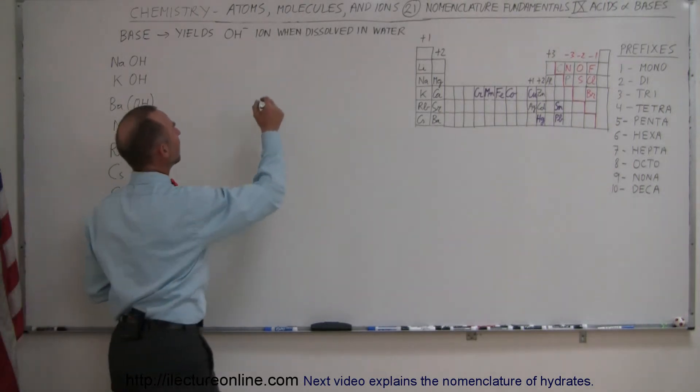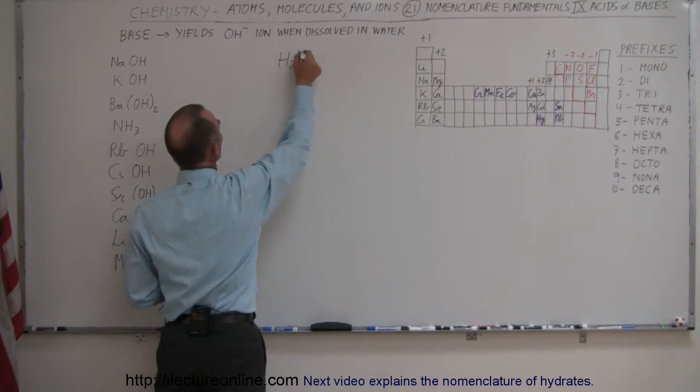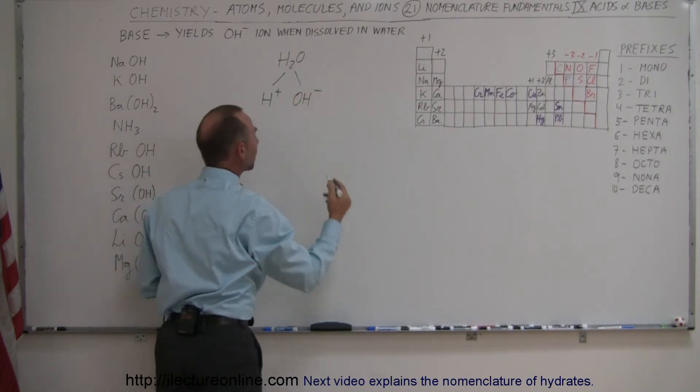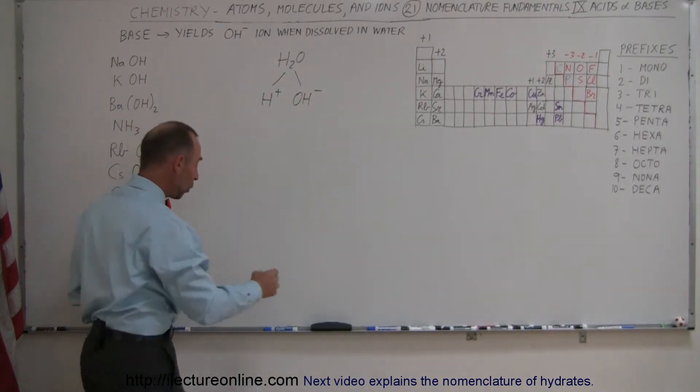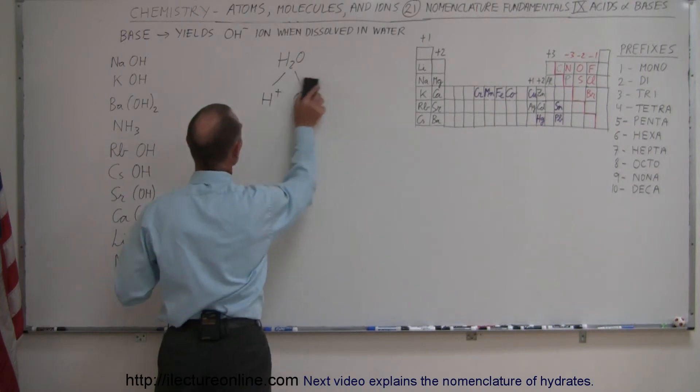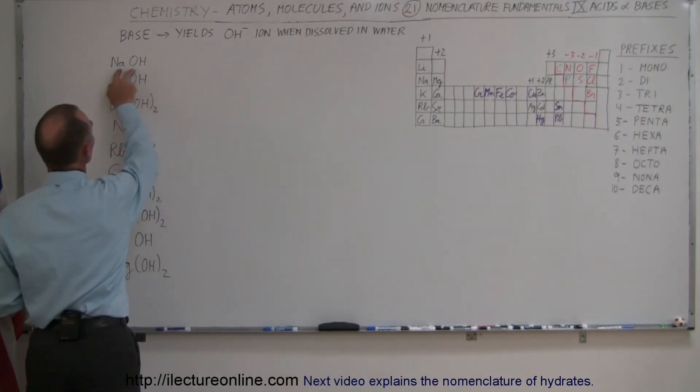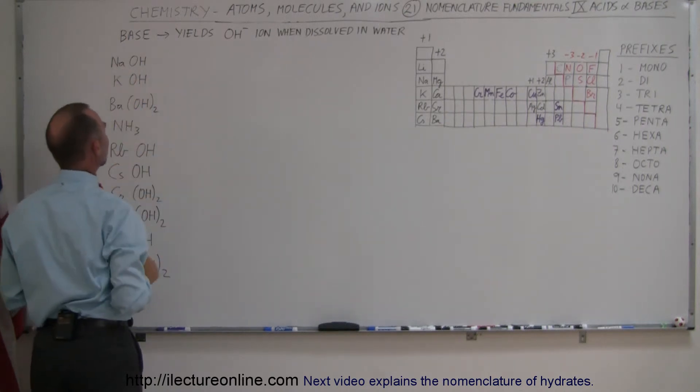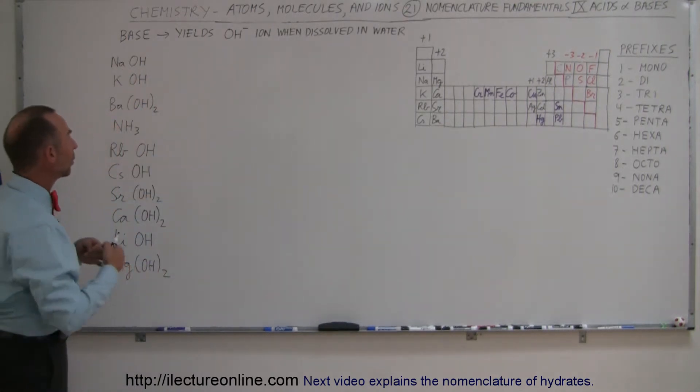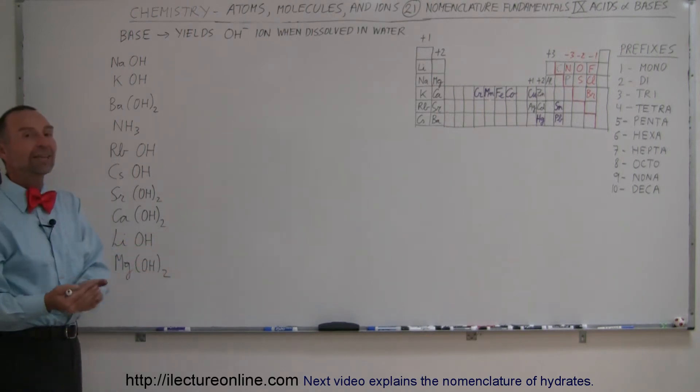What happens is it takes a water molecule H2O and separates it into an H plus and an OH minus. That would be one way a base acts. In many of the bases on the board, they simply split up into two ions—in this case an OH minus and an Na plus. That's how OH ions are placed into water by adding these substances.